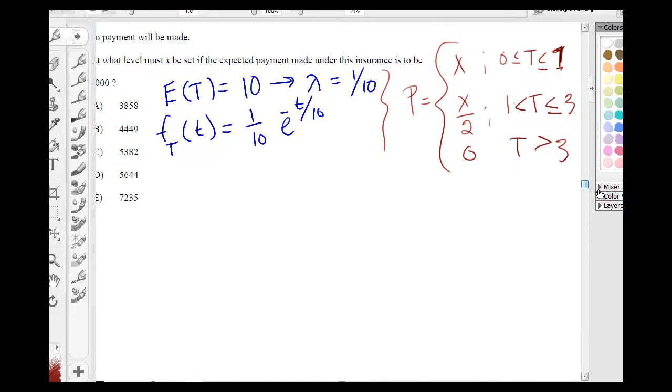So that is what we have, and we just need to find E of P. And this is just going to be the integral going from 0 to 1 of X over 10 e to the negative t over 10 dt. This is just one part, but we're only integrating with respect to t, so don't pay attention to X right now.